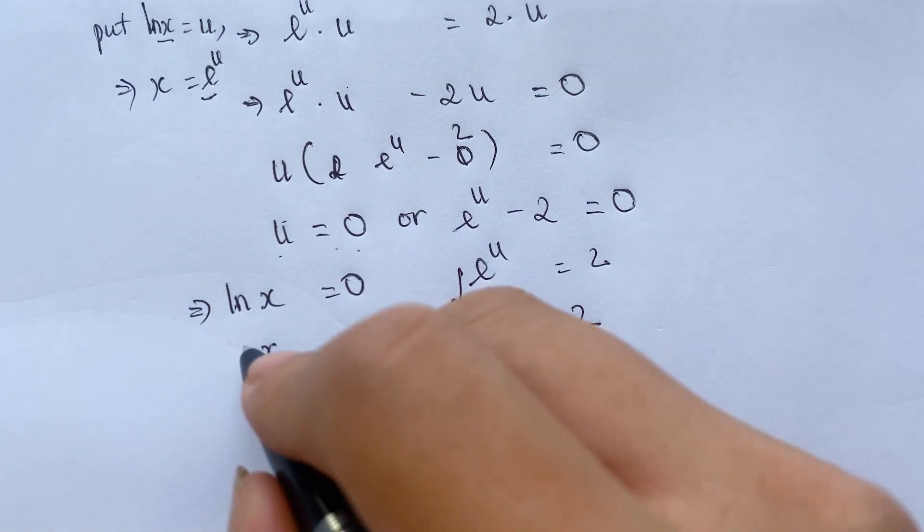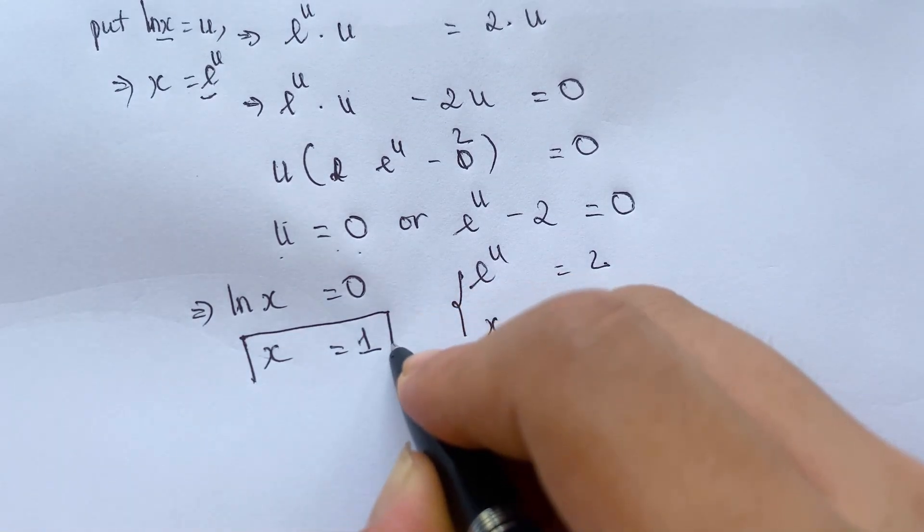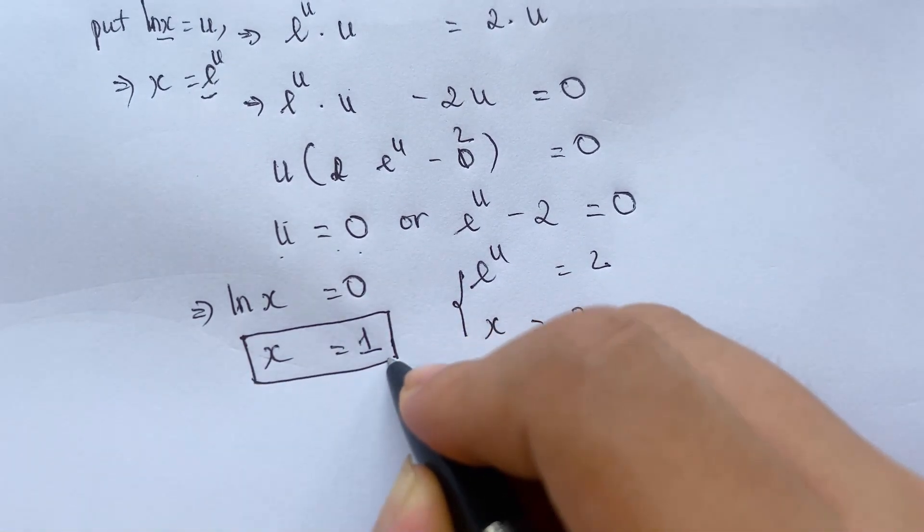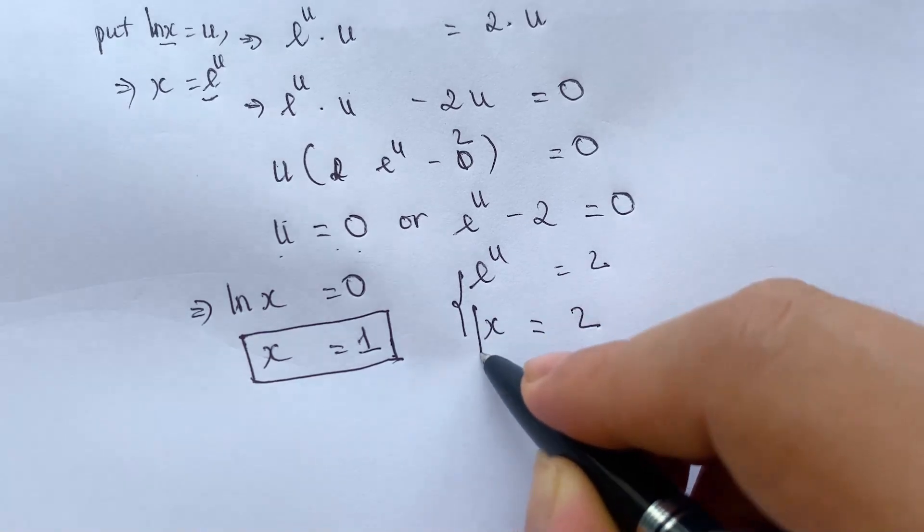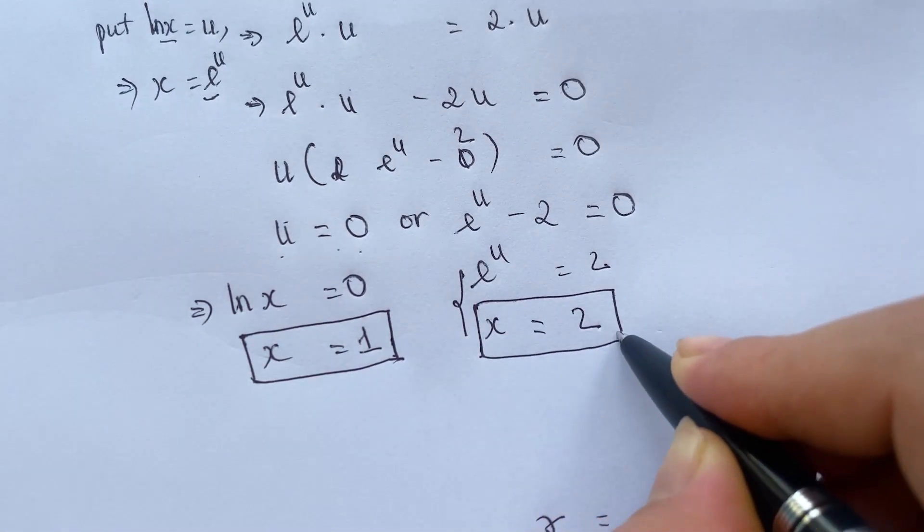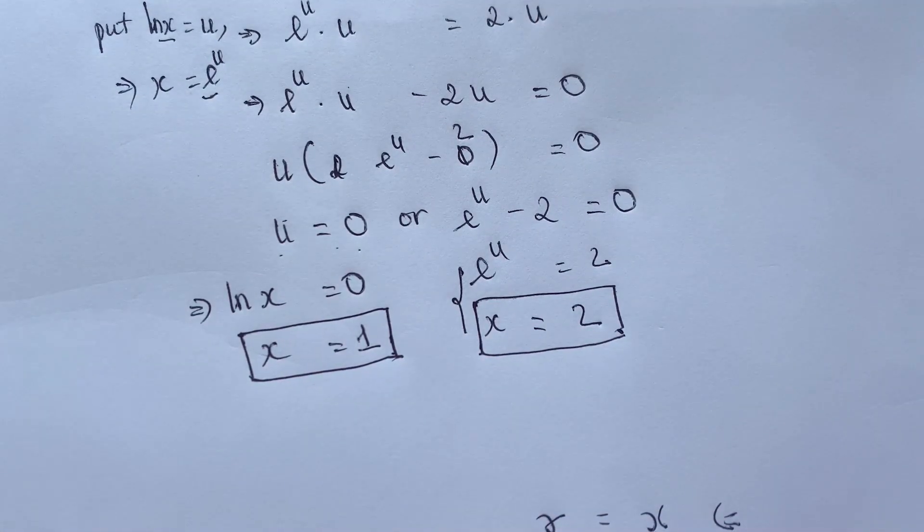So, for the exponential equation, we have two solutions. Firstly, x equals 1. And secondly, x equals 2.